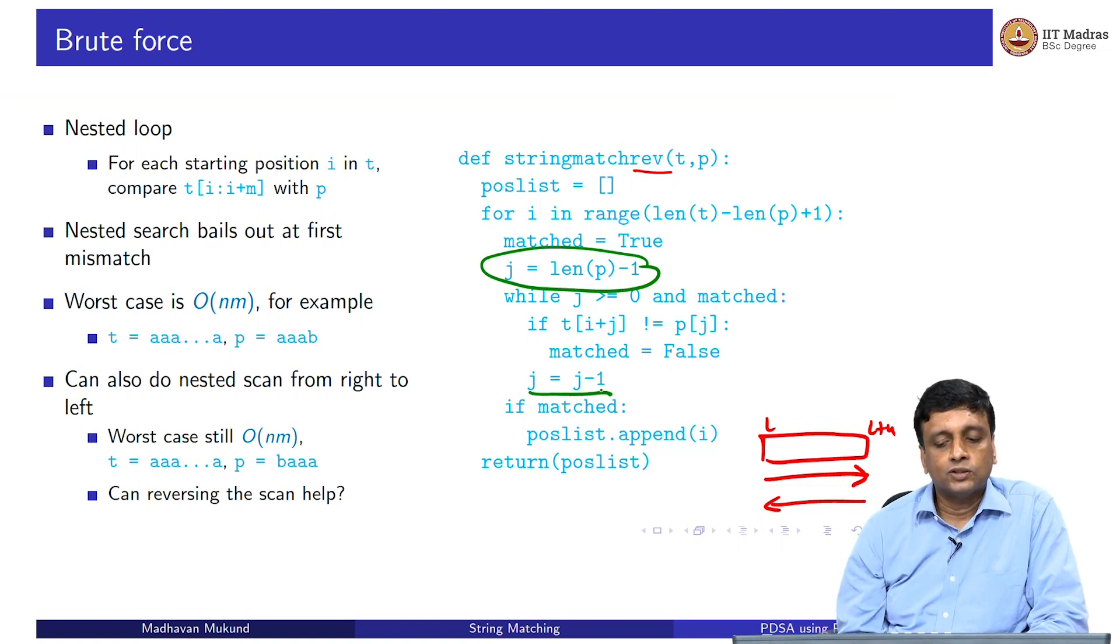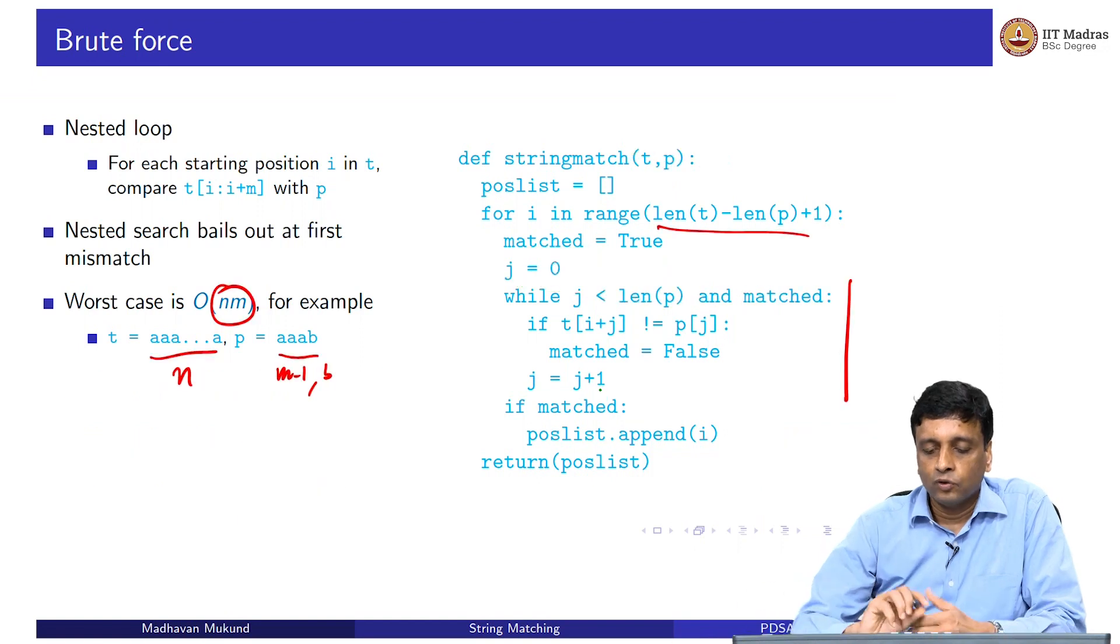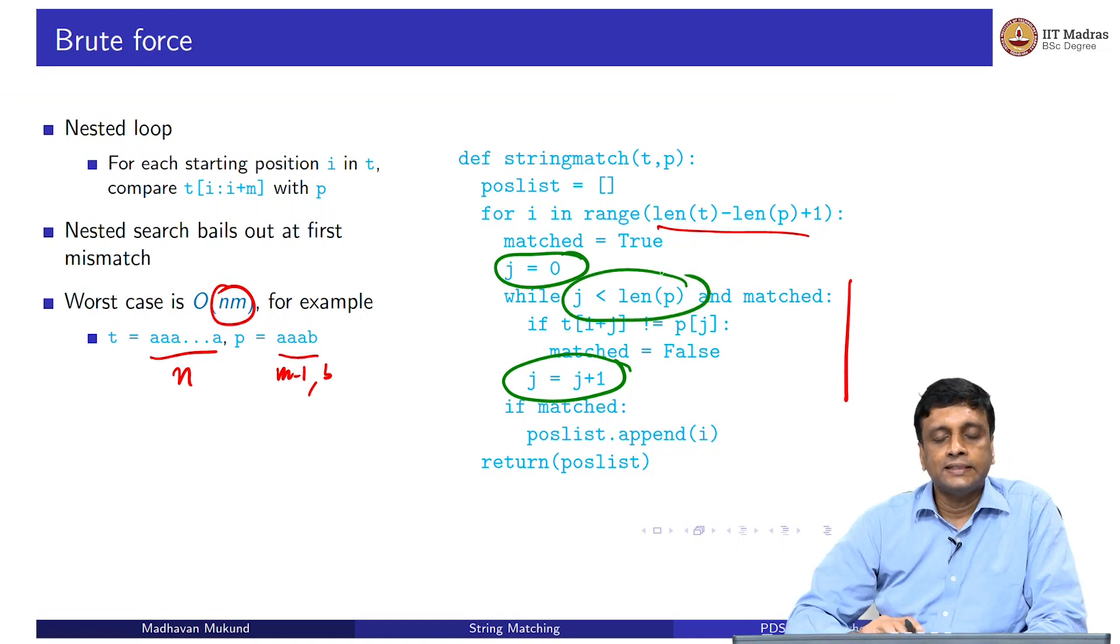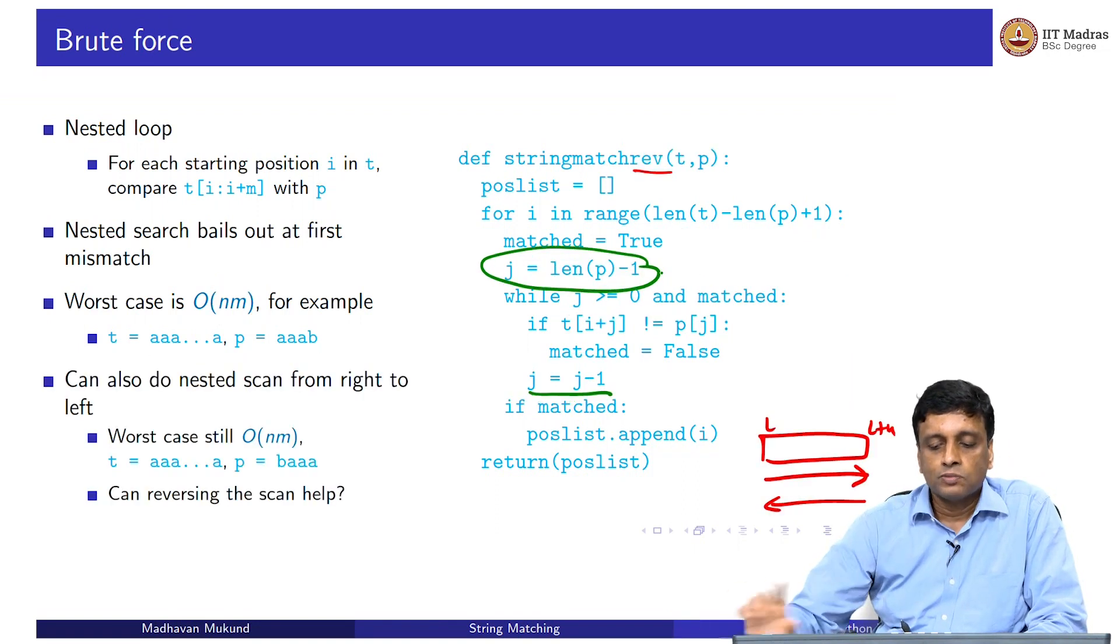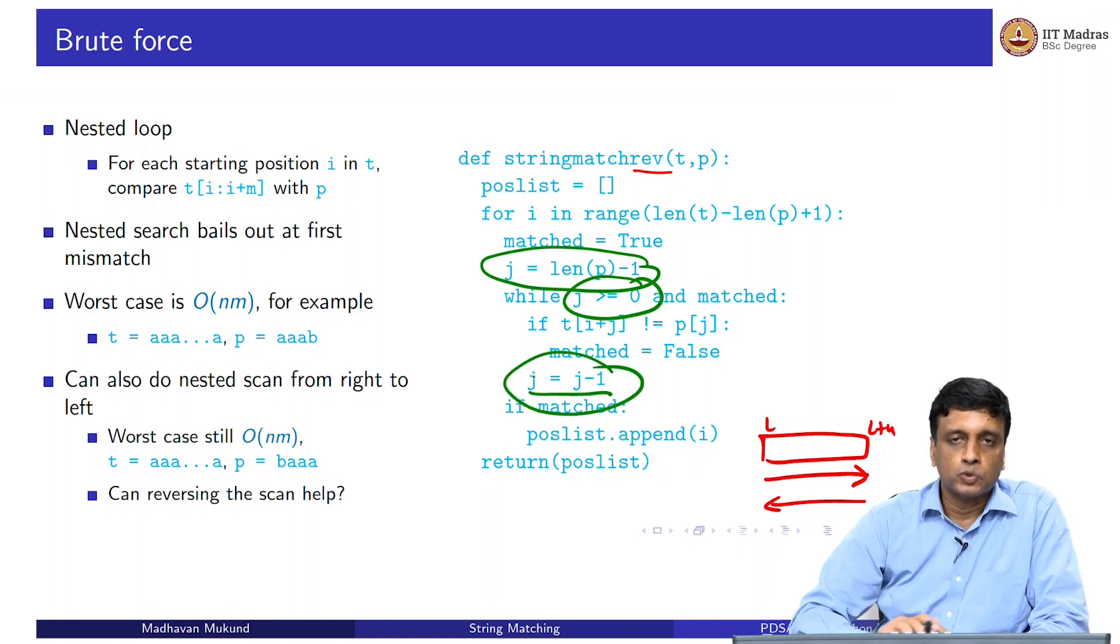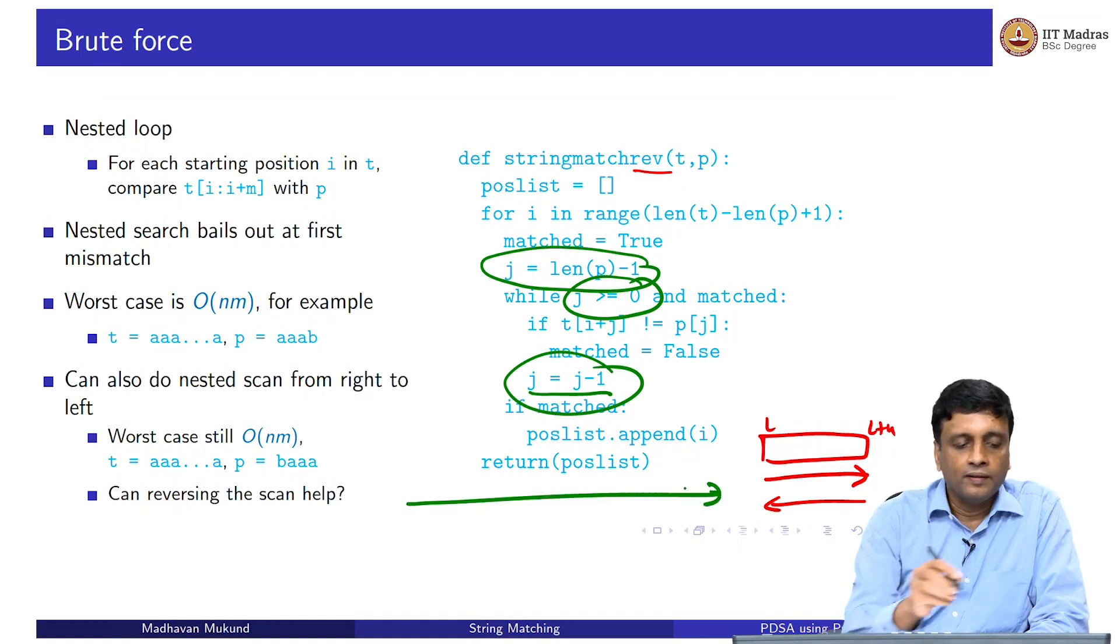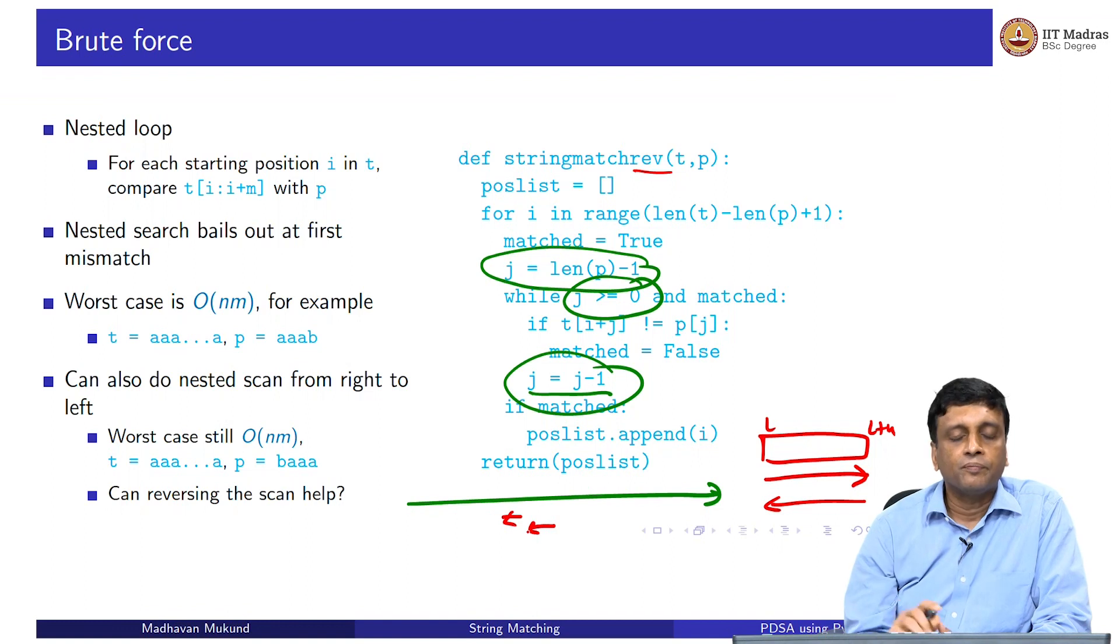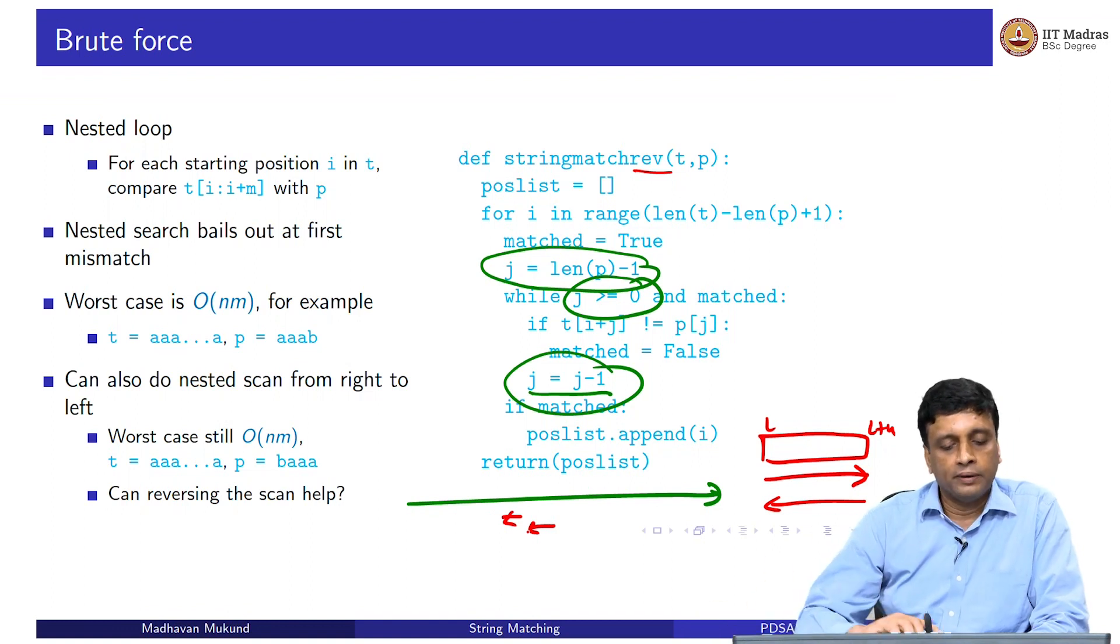Otherwise there is no change. If you compare this code with the previous code, you will find that the only difference is J equal to 0, J equal to J plus 1, and the while condition J less than length of P is matched to J equal to length P minus 1, J greater than equal to 0 and J equal to J minus 1. All we are saying is that we are processing T from left to right, but each slice within T we are processing from right to left.